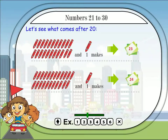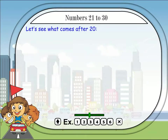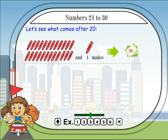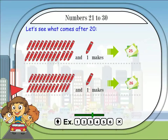Twenty-three and one makes twenty-four. Twenty-four and one makes twenty-five. Twenty-five and one makes twenty-six.